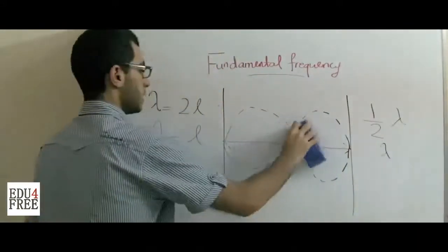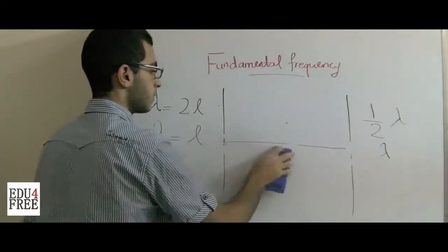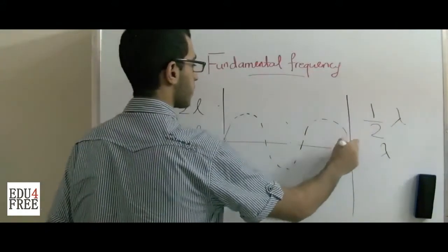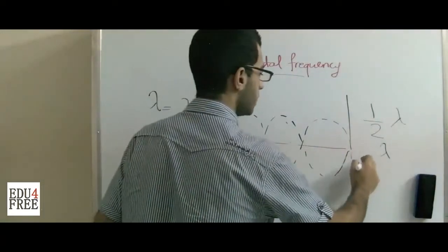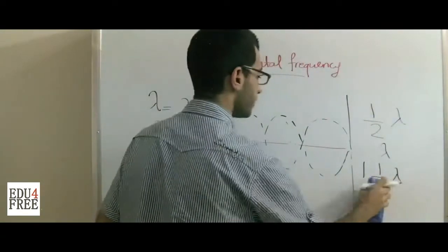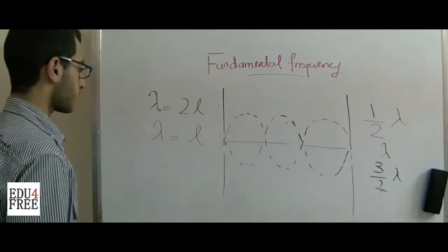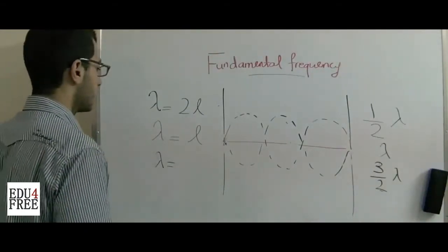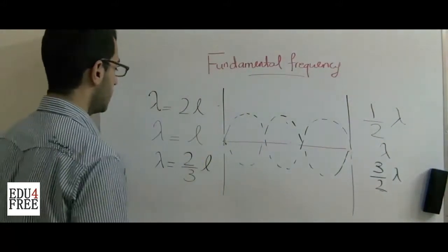What if we have a crest, a drop, and a crest? So we have one and a half wavelengths, or in other words, 3/2. In this case, the wavelength will equal 2/3 of the length L.